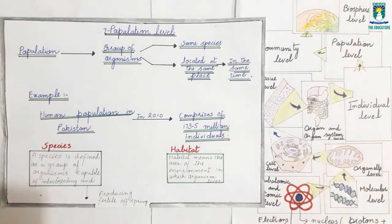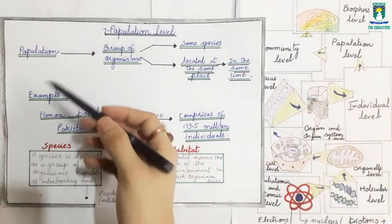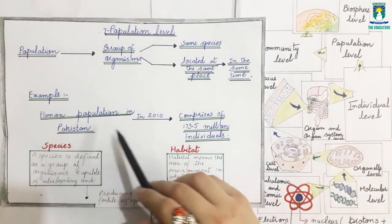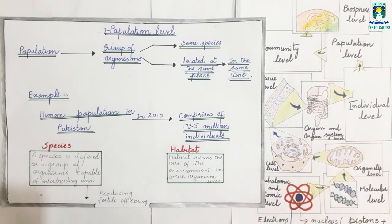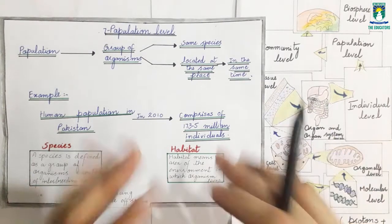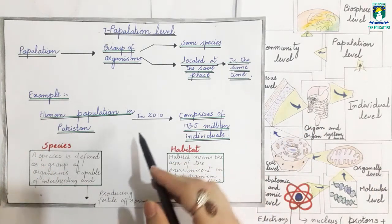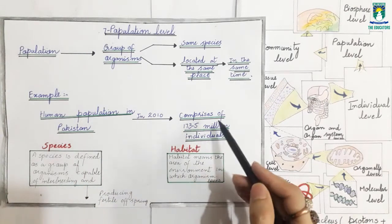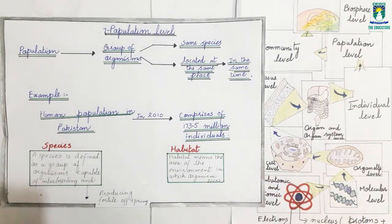For example, human population in Pakistan in 2010 comprises of 173.5 million individuals, which is increasing day by day. It means that, for example, human beings are a species, the same kind of species. And they occupy Pakistan at the same time. This makes the population. In 2010, human population in Pakistan comprises of 173.5 million individuals, according to the Ministry of Population Welfare, Government of Pakistan, which is increasing day by day.